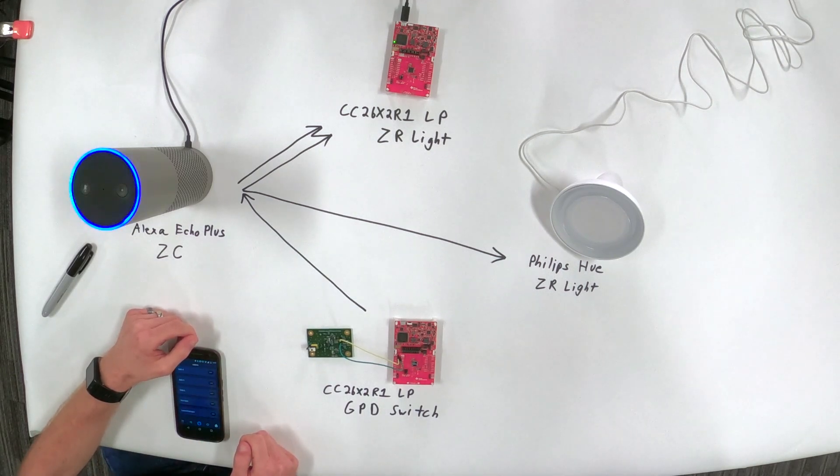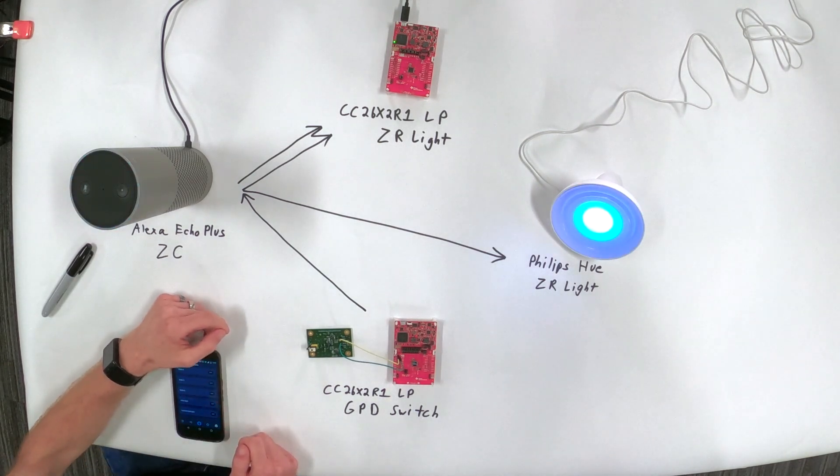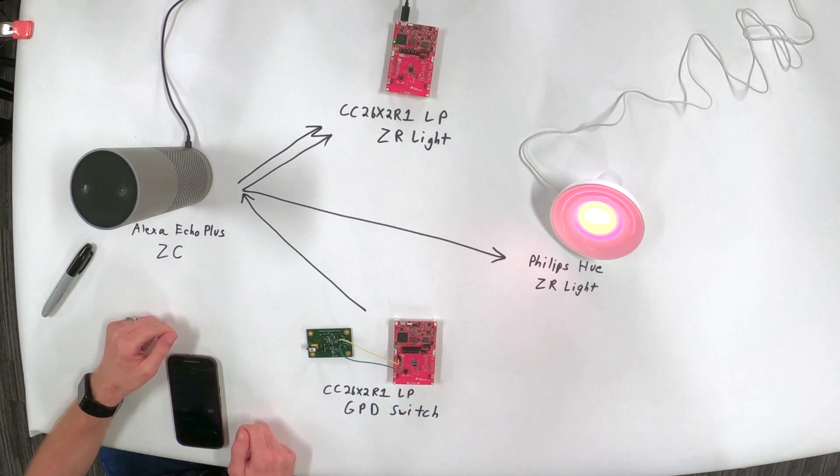Alexa, turn on the Hue light. And we saw it just turned on and not just that, but we can also control the color. So Alexa, change the Hue color to red. Oh wow. Yeah. So all kinds of different voice commands are able to do that as well. So the echo can do that, or you can do that through the app with button presses and switches. Exactly.